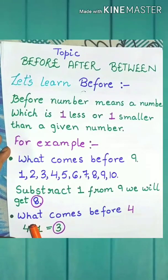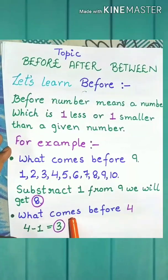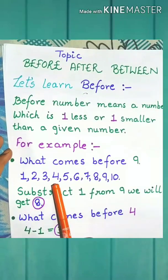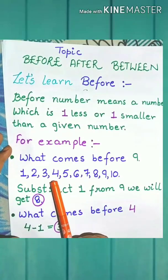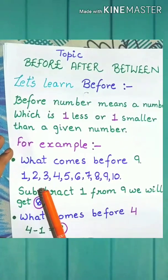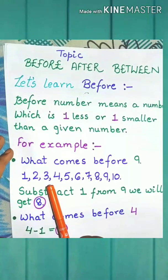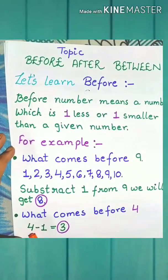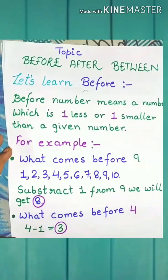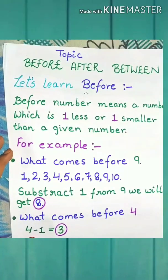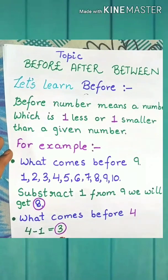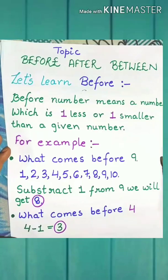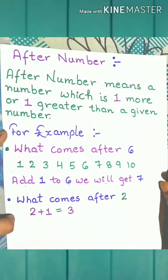Now let's see another example. What comes before 4? First observe the number line. We will subtract 1 from 4. When we subtract 1 from 4, we will get 3. Because 3 comes before 4. Now let's learn after number.